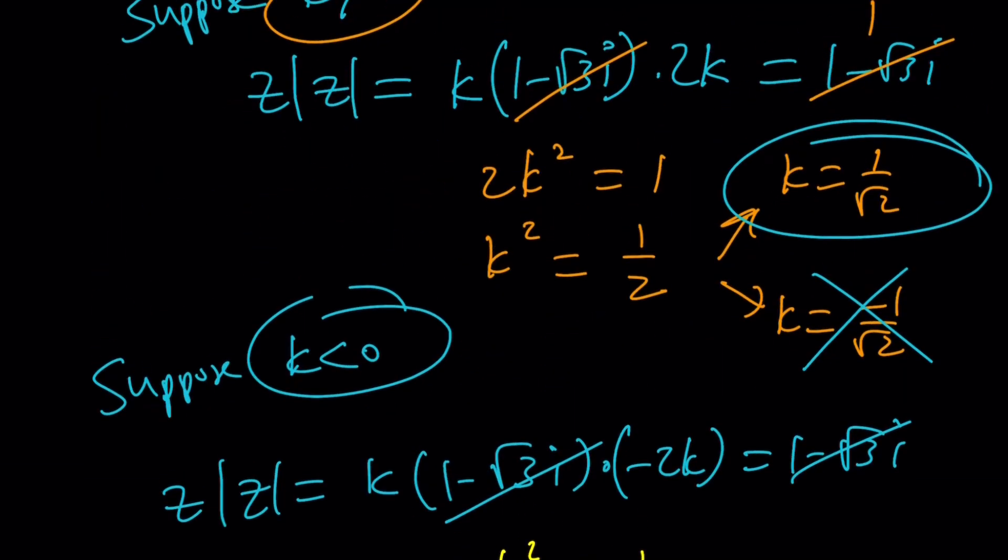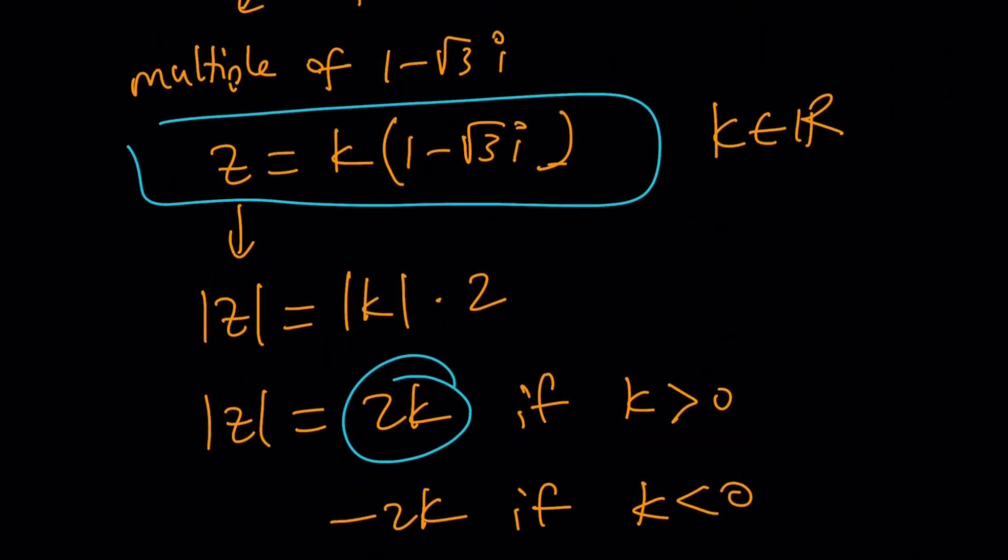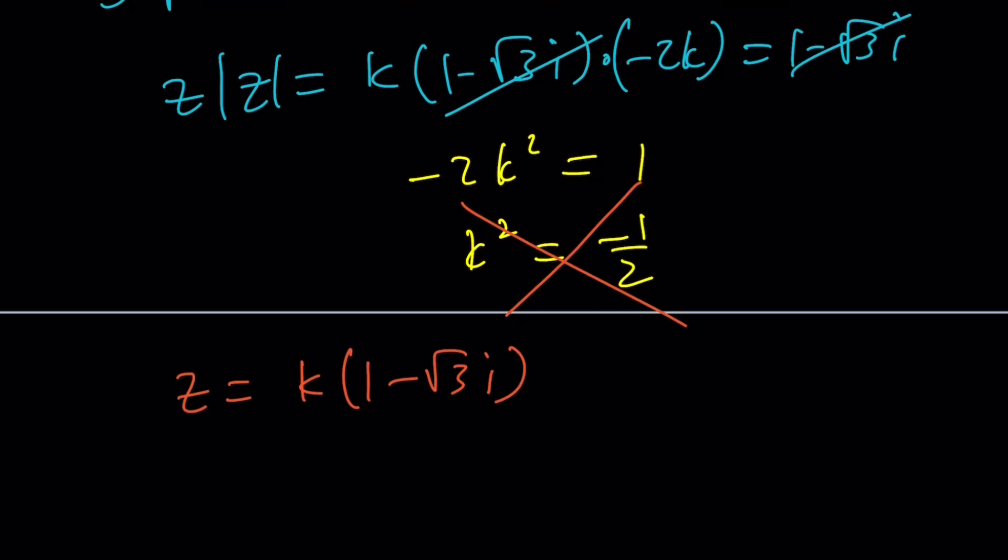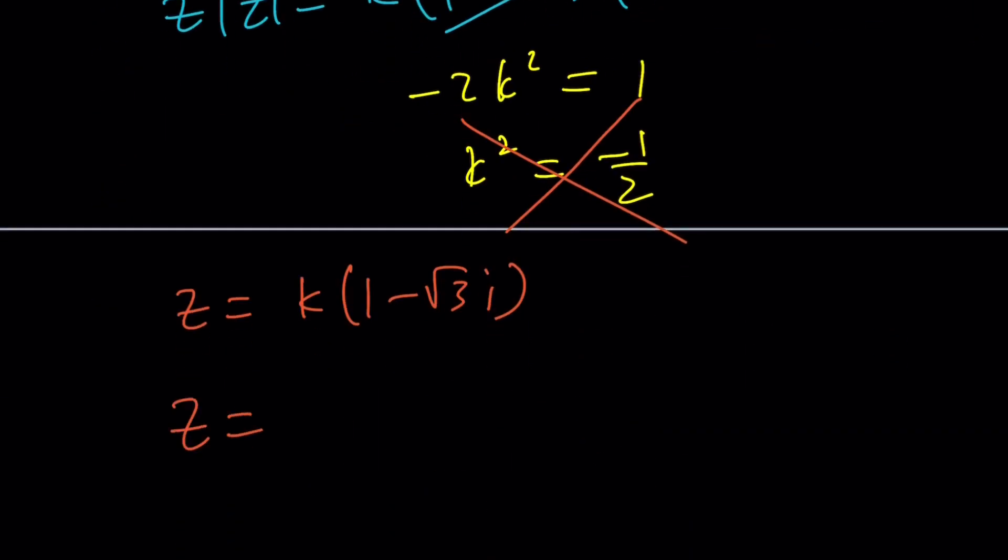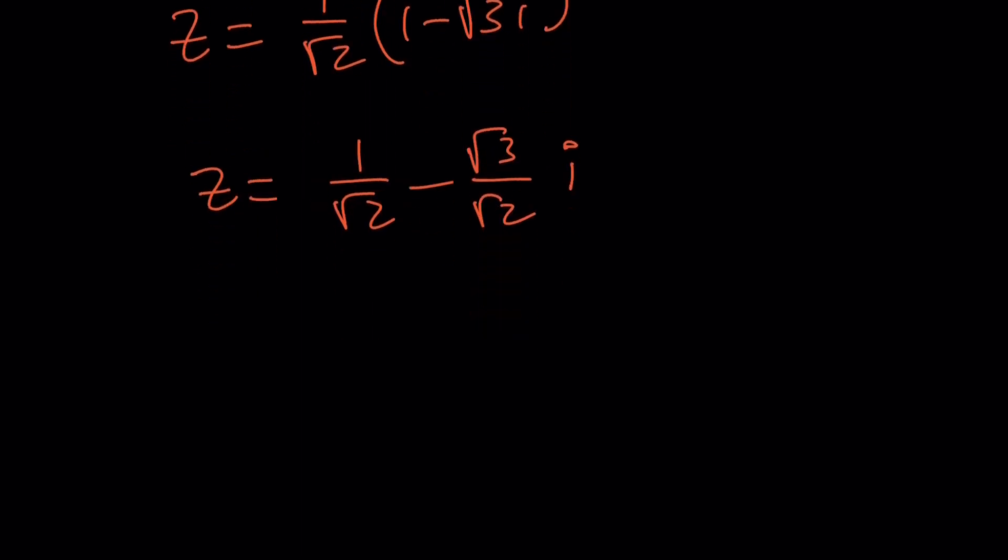k is equal to 1 over root 2. But we didn't evaluate the AB values, right? What does that mean? It just gives us the z. Remember, we were trying to solve for z. And z was k times 1 minus root 3i. And if k is equal to 1 over root 2, then z is going to be 1 over root 2 times 1 minus root 3i. And this turns into 1 over root 2 minus root 3 over root 2i. If those numbers at the bottom bother you, which is something that bothers me, you can go ahead and rationalize the denominators and just write it in a simpler form.